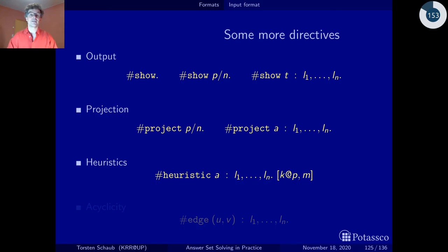Heuristics is a statement that biases the solver heuristic. You must have a conditional literal here. With these heuristic modifiers, you can say, if I have a certain predicate like an action or a fluid, I want to say that if I have the choice between making a fluid true or an action true, I make first the action true or false or whatever. This is something you can bias.